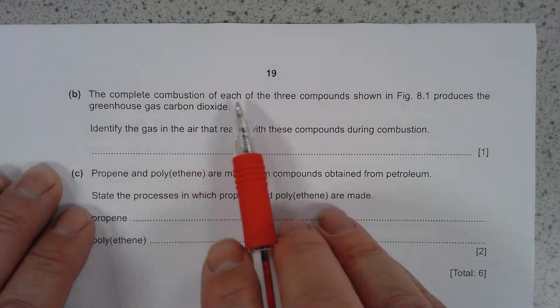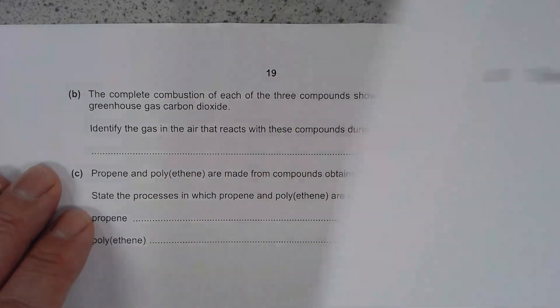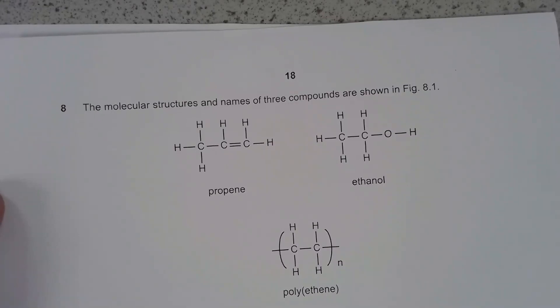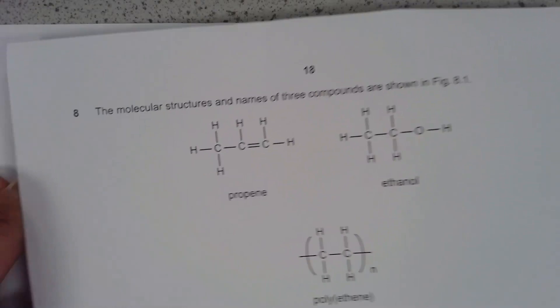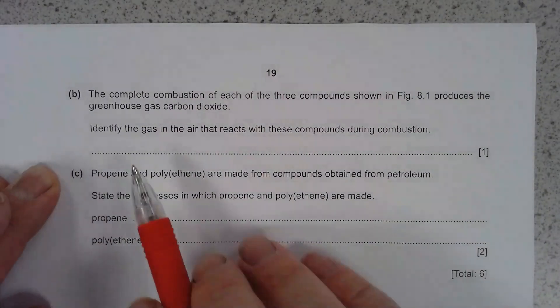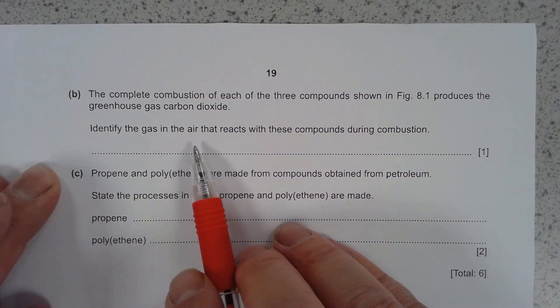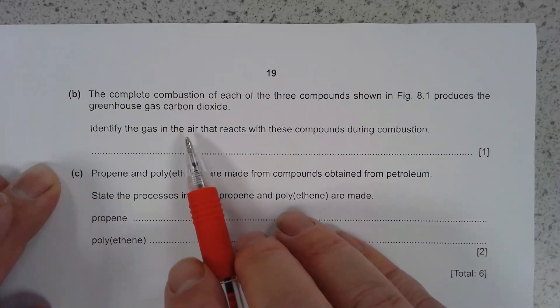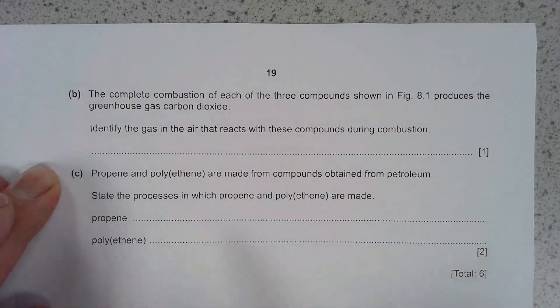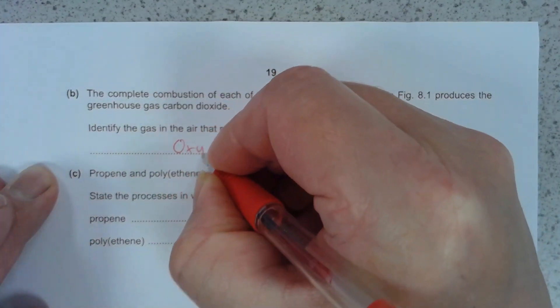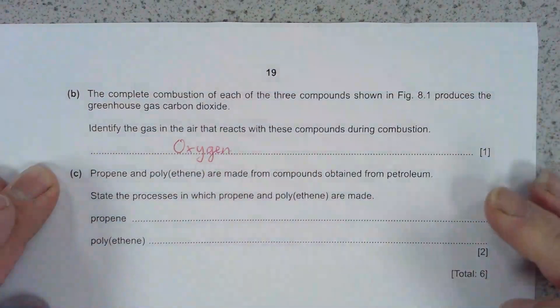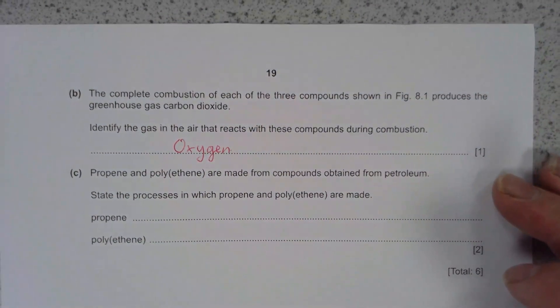So you're told you've got the three compounds referring to the three compounds in this question, and we know that they're organic compounds. Two of them are hydrocarbons. So identify the gas in the air that reacts with them. It's kind of a roundabout question, but the key here is combustion. For combustion, you need a fuel, you need heat, and you need oxygen. So the gas in the air is oxygen. It's a little bit of a trick there, but actually, it's a very simple question when you decode it.